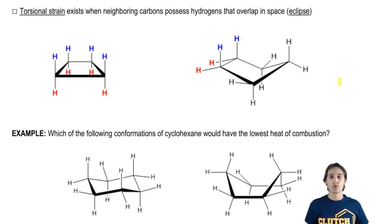Then we have torsional strain. Torsional strain is a different type of strain that exists when carbons that have hydrogens overlap in space. Basically, the hydrogens will be eclipsed in space.